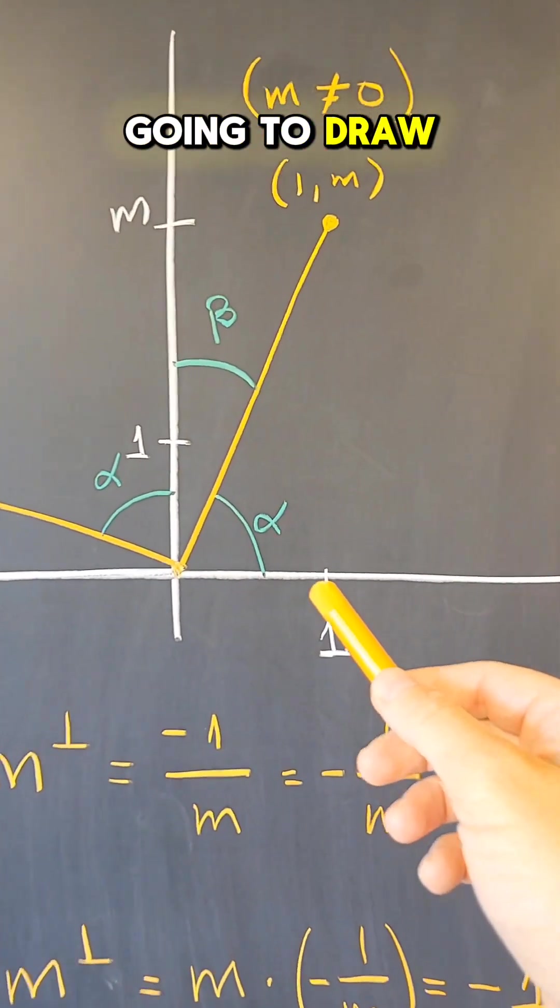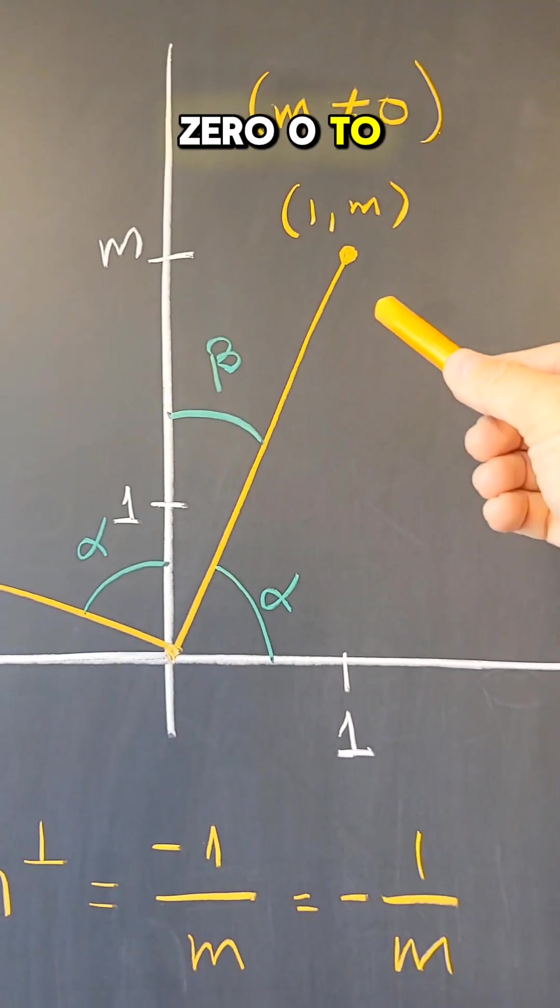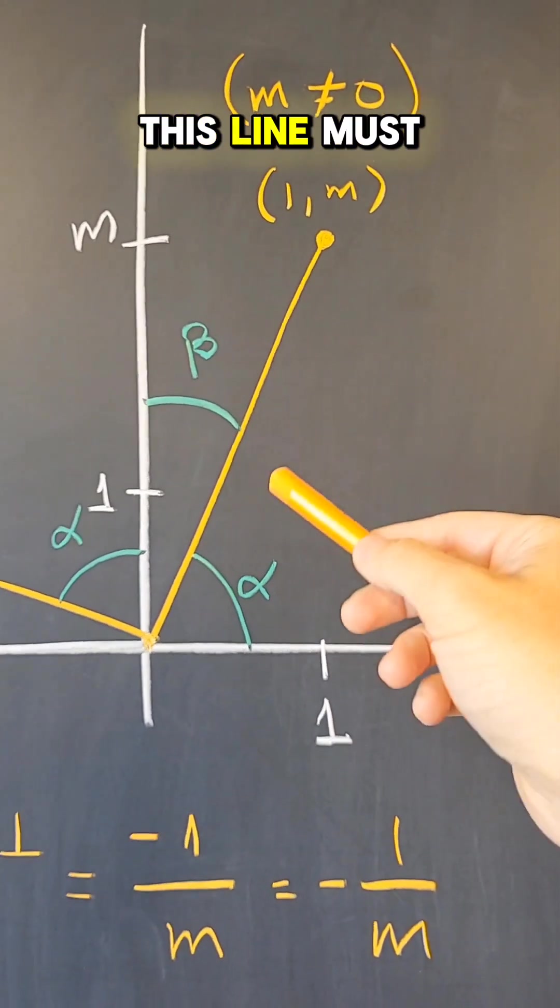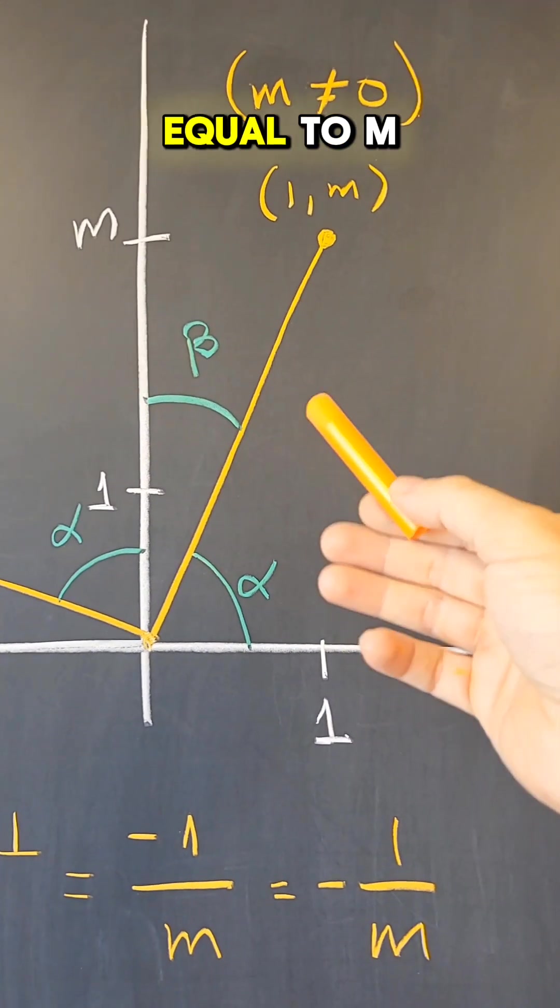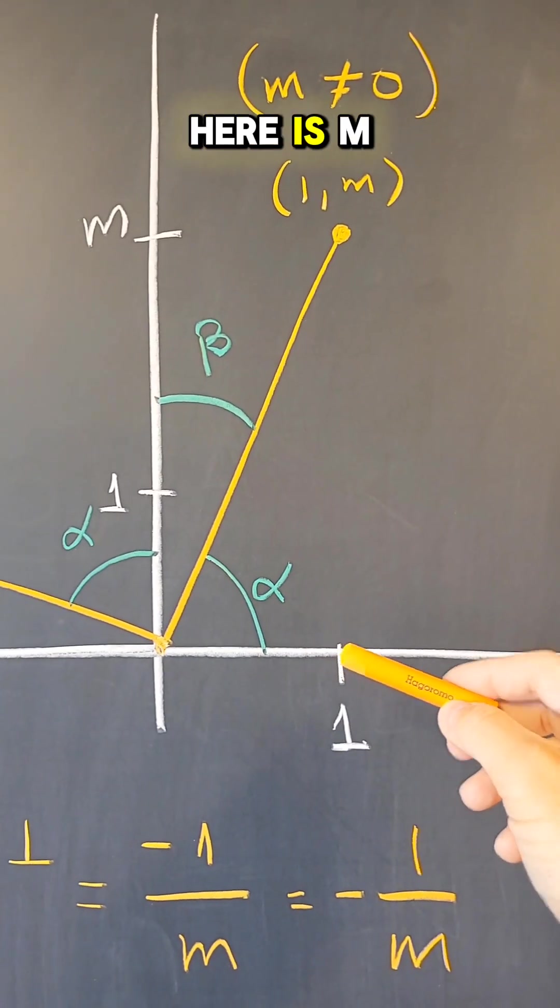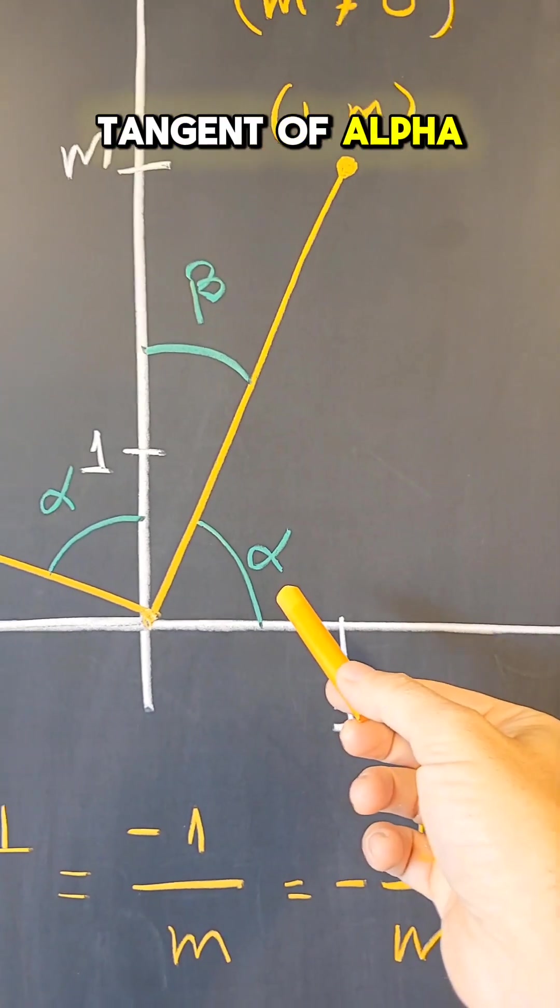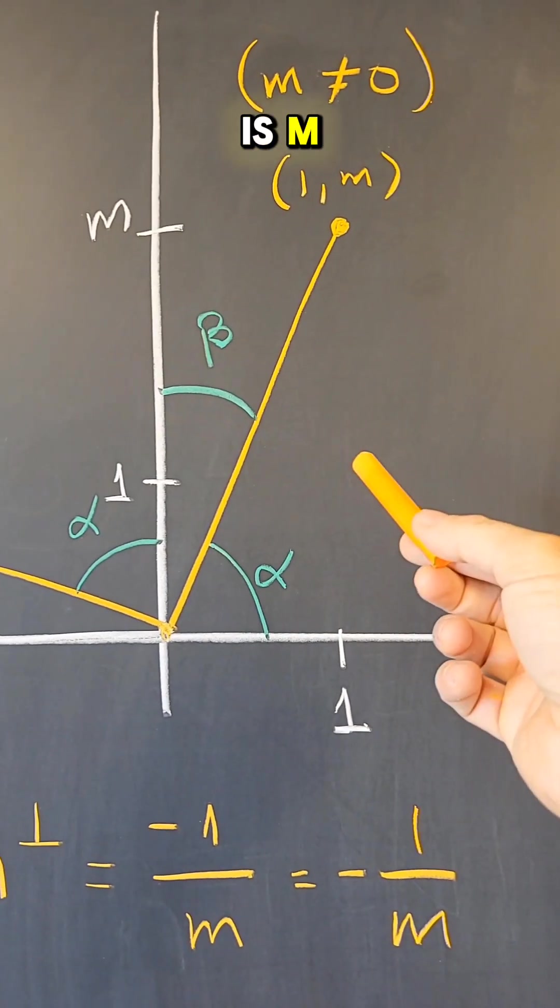For that, I'm going to draw a line from zero, zero to a point one comma m. m here is non-zero. Then this line must have a slope equal to m because this distance from here to here is m. This is a one. So the slope or the tangent of alpha for this line is m.